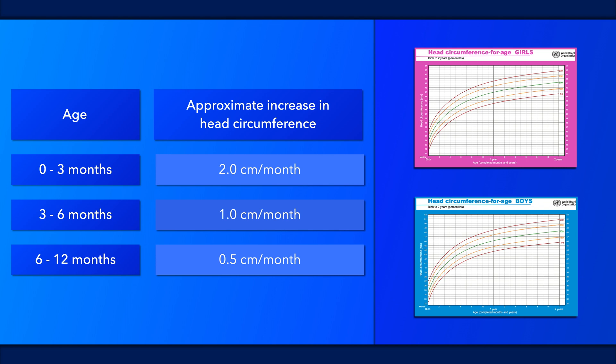Monitoring changes in head circumference is vital because appropriate growth is an indicator of health, while conversely, abnormal growth can result from several conditions or problems.